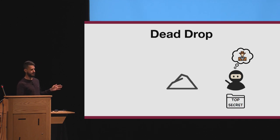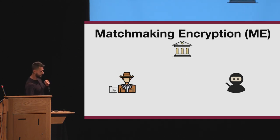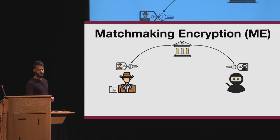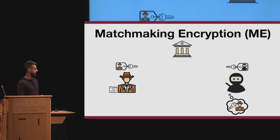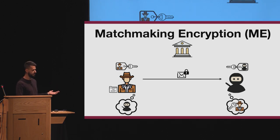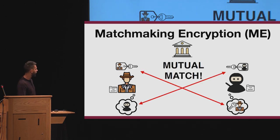A cryptographic scheme implementing a dead drop must be seen as a non-interactive secret handshake — an encryption scheme with the same properties as secret handshake. This is Matchmaking Encryption. There is an authority that generates keys for the parties containing the attributes, and is also responsible for generating an additional decryption key containing the policy of the receiver. The sender can encrypt by choosing a policy on the fly, using the encryption key for its attributes, the policy, and the message, to produce a ciphertext. The receiver can decrypt using both keys — one for the attributes, one for the policy — and the property is that if there is a mutual match (both are satisfied), the receiver can retrieve the message.